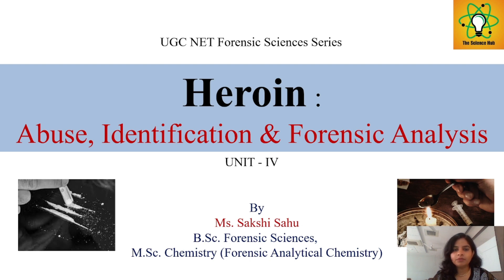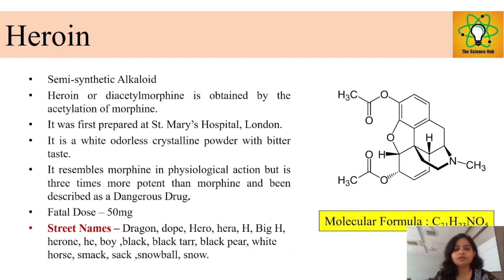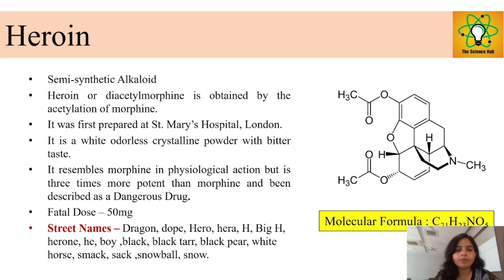Today we will learn about heroin abuse, identification, and forensic analysis. Heroin is a semi-synthetic drug derived from opium. Here is the structure and molecular formula of heroin. Basically, heroin is derived from morphine, which comes from opium. It falls under the category of depressants.